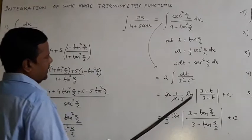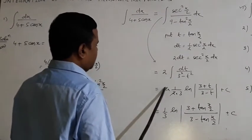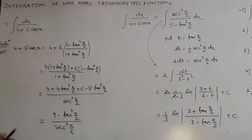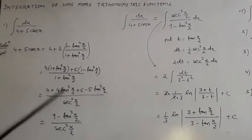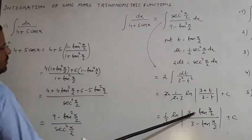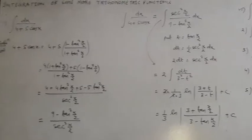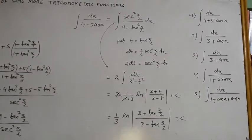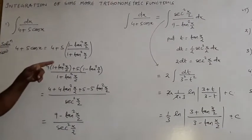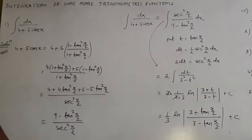Substituting back t = tan(x/2), the answer is (1/3)·ln|(3+tan(x/2))/(3−tan(x/2))| + C. Problems 1 and 2 are very similar. For Problem 2 with dx/(3+cos x), follow the same steps as Problem 1 and solve by yourself.